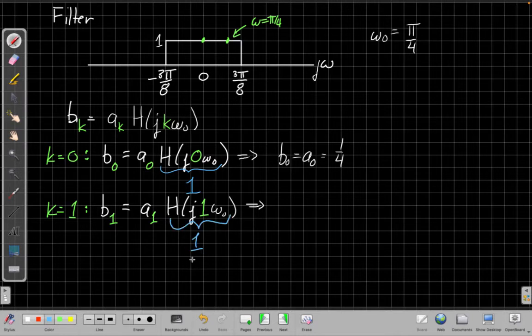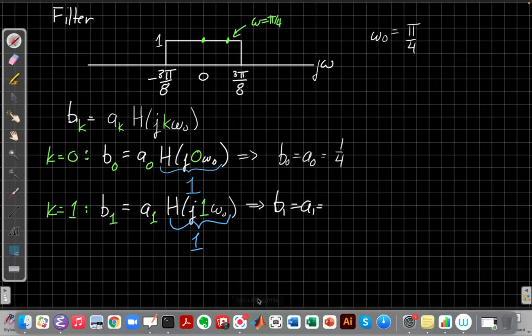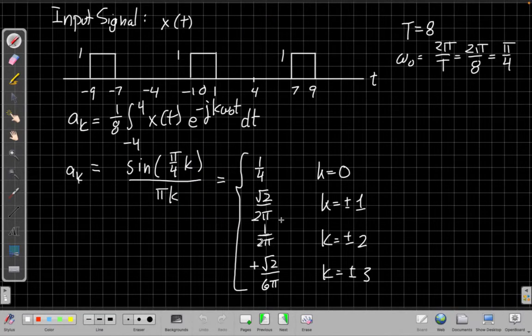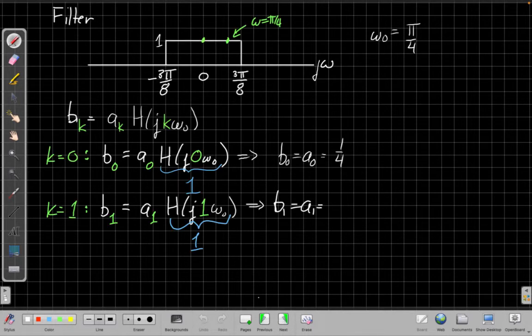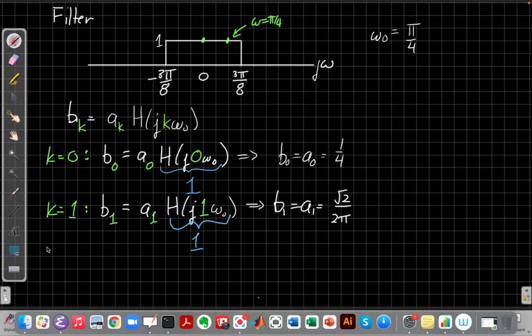So I get b1 is equal to a1. And if I flip back to the previous page, a1 is root 2 over 2 pi. So I'm going to use that value. Now I continue just using the next value of k. Maybe I'll use k equals minus 1 next, because looking ahead I can see that will still be inside the filter passband. This section here, where the gain is not 0, we call the passband of the filter. This region out here, from this ideal filter where the gain is 0 everywhere, is the stopband.